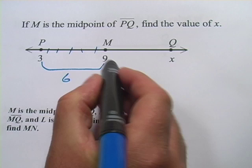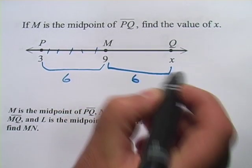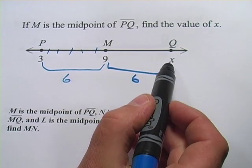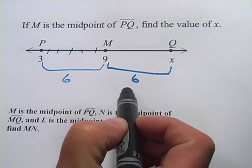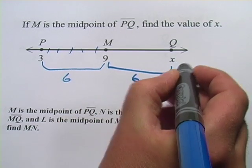So if this distance is 6, then this distance is also going to be 6. So to find what x is, I would just add 6 to 9 and I would get 15.